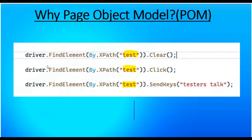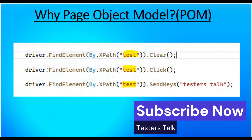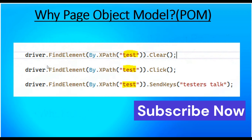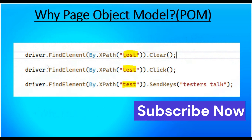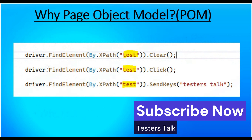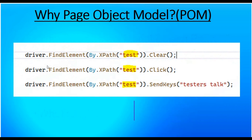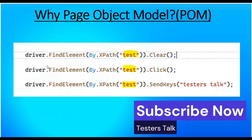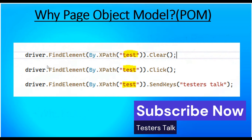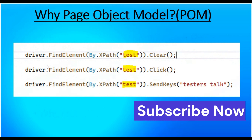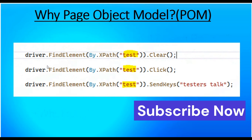So let's discuss why we have to use the Page Object Model concept. If you look at the diagram, I'm identifying the element and performing the action. The locator value is highlighted in yellow, but in each line I'm performing a different action on the element — first I'm clearing it, second is a click method, and third is send keys. In these cases the locator value is the same and we are hard-coding that particular value.